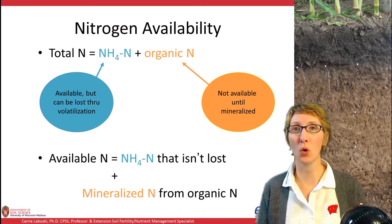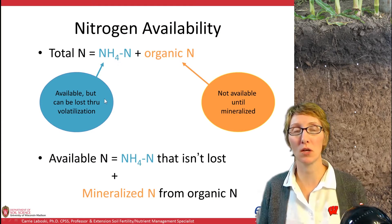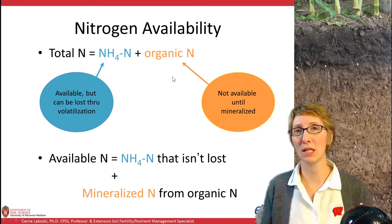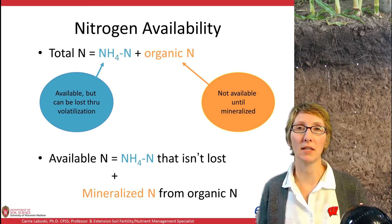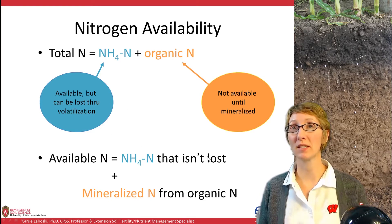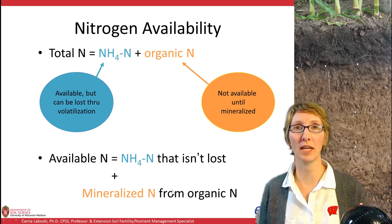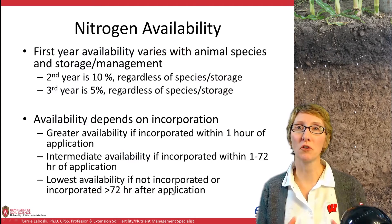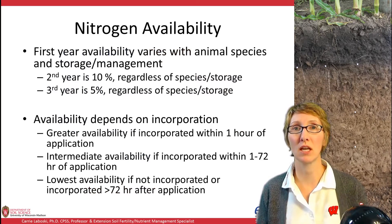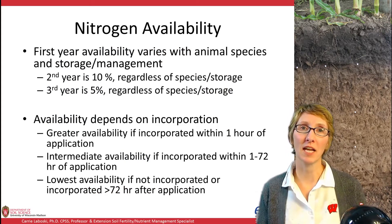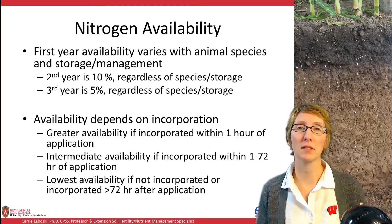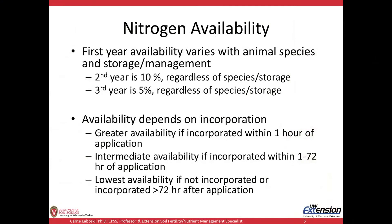Moving into nitrogen availability: total N in manure is composed of ammonium N, which is immediately available to a plant but can be lost through volatilization, and organic N, which is not immediately available but can be mineralized and made available. Available N in manure is a mixture of ammonium that's not lost plus the mineralizable N from the organic N component. First-year nitrogen availability varies with animal species, storage, and management. We also have second and third year N availability credits: 10% of total N applied in year two, and 5% in year three, regardless of species or storage.